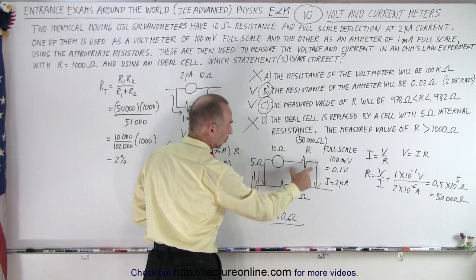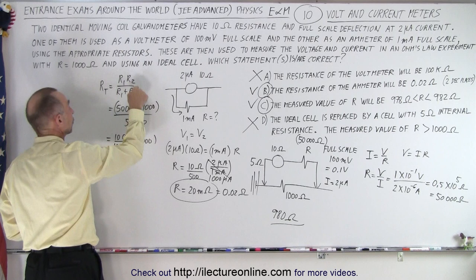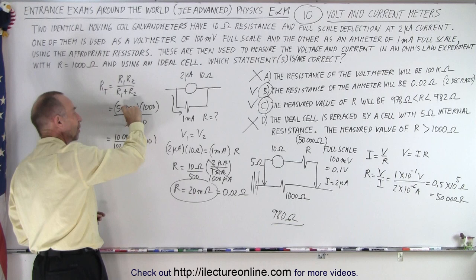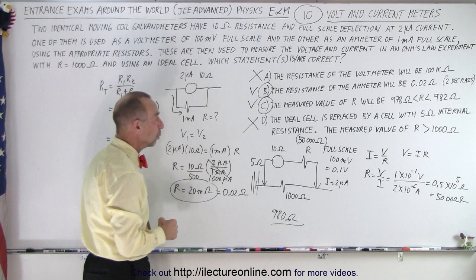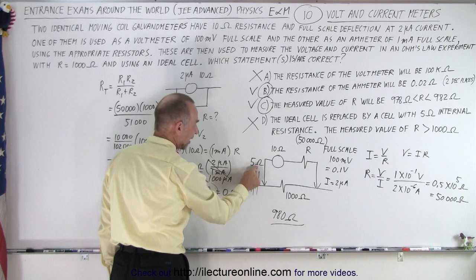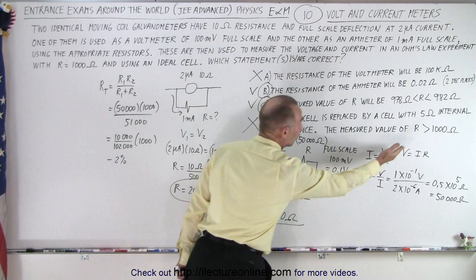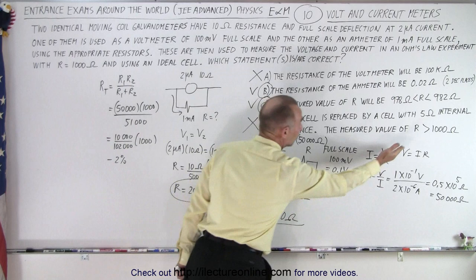And then finally, the equivalent resistor we get from reading the actual resistor in the circuit and the resistor in the voltmeter, they're in parallel, so we use the product over the sum, and you can see that that means that instead of reading 1,000 ohms, we'll actually read about 98% of that, or about 980 ohms. And finally, when we replace the battery, the ideal battery that has no resistance to a battery that has 5 ohm resistance, it simply adds 5 ohms to the 980, giving us 985, which is still less than 1,000, that makes D not correct. And that is how it's done.